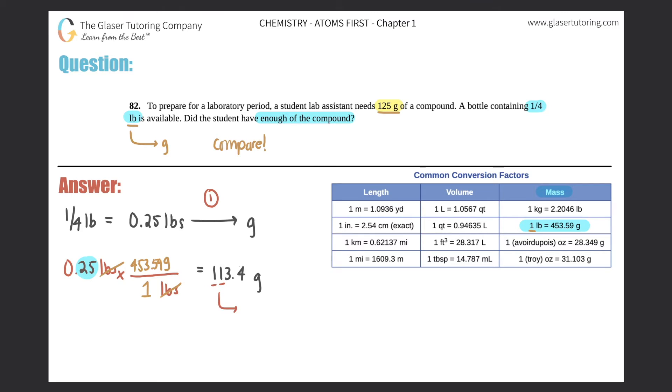So this would technically be 110 grams if we were doing sig figs. So that's the same thing as saying one-fourth of a pound. One-fourth of a pound is roughly 110 grams. And that's how much that this student has.